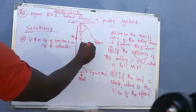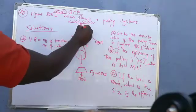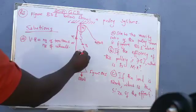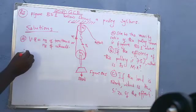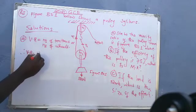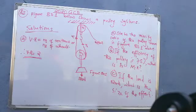So therefore, the velocity ratio is equal to 2. It is a ratio, so there are no units. We can move on to B.